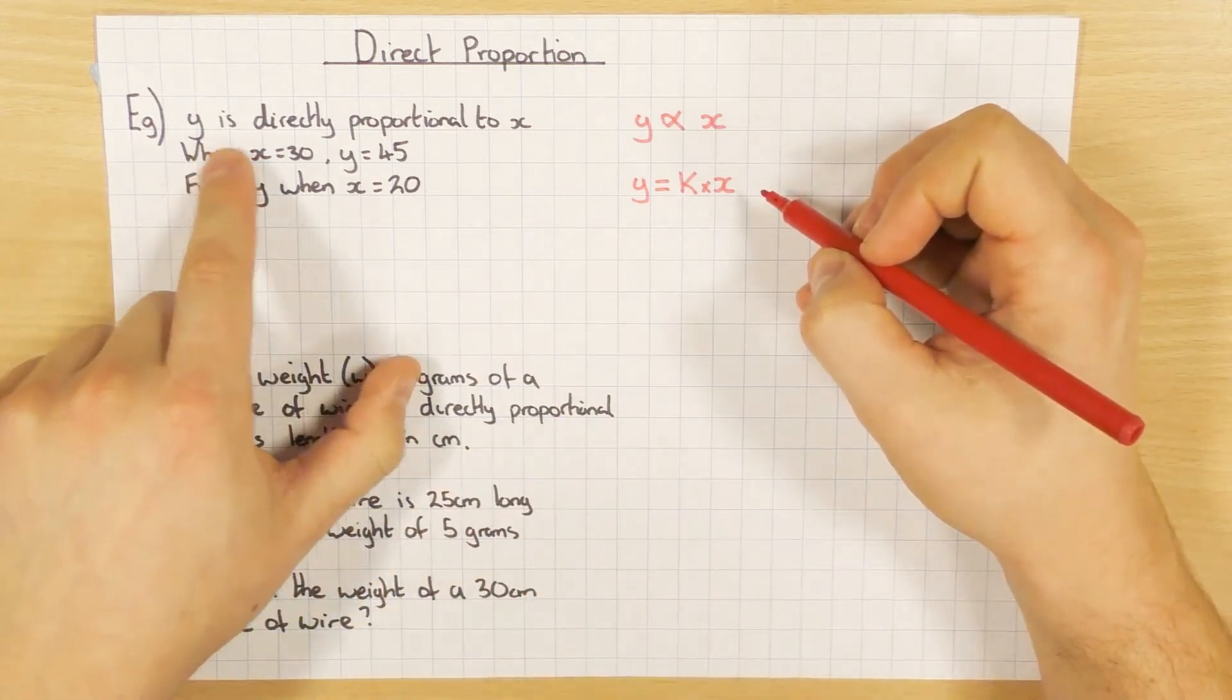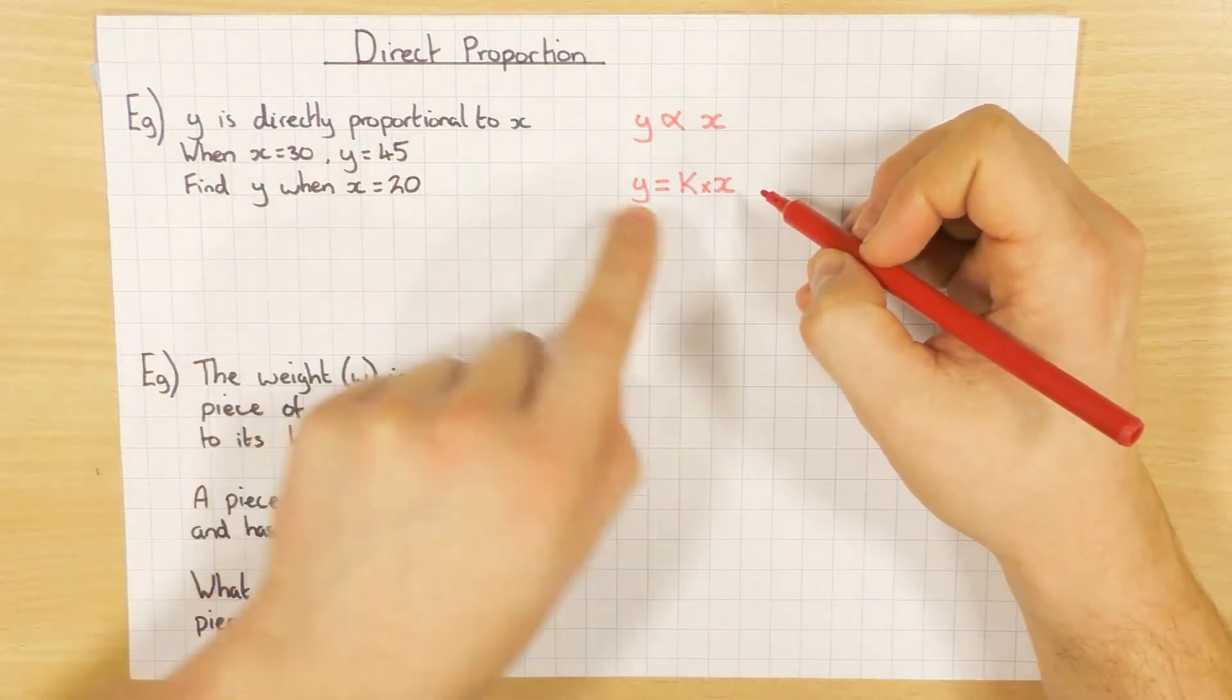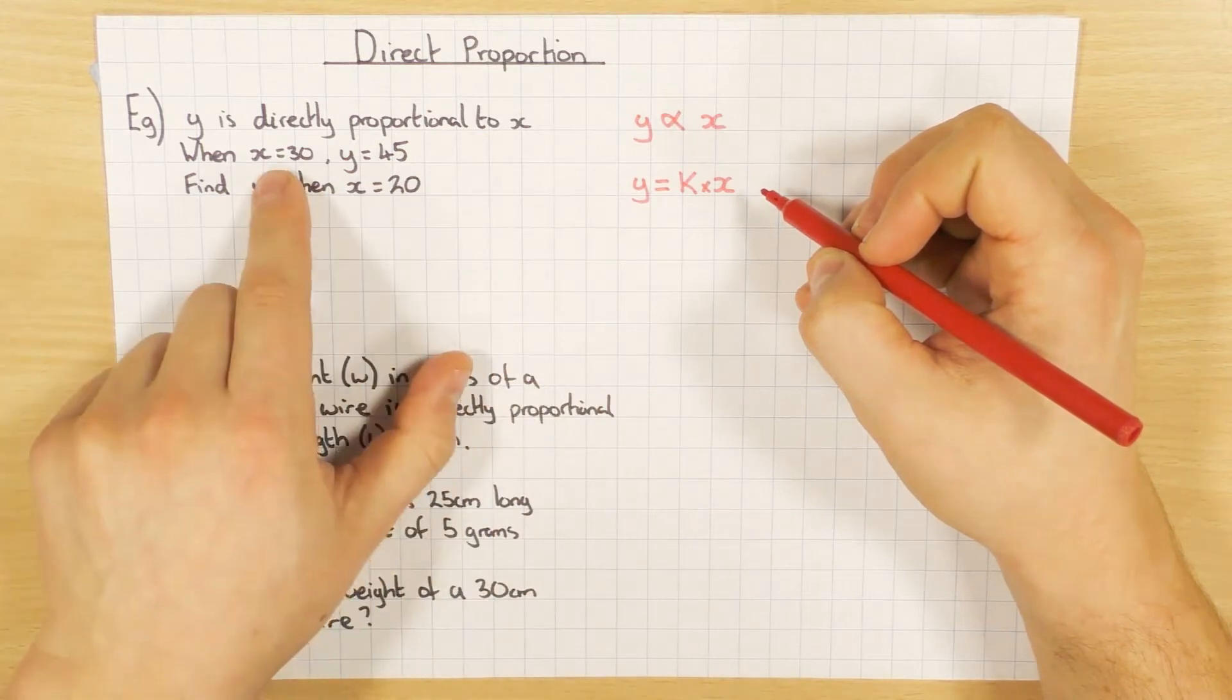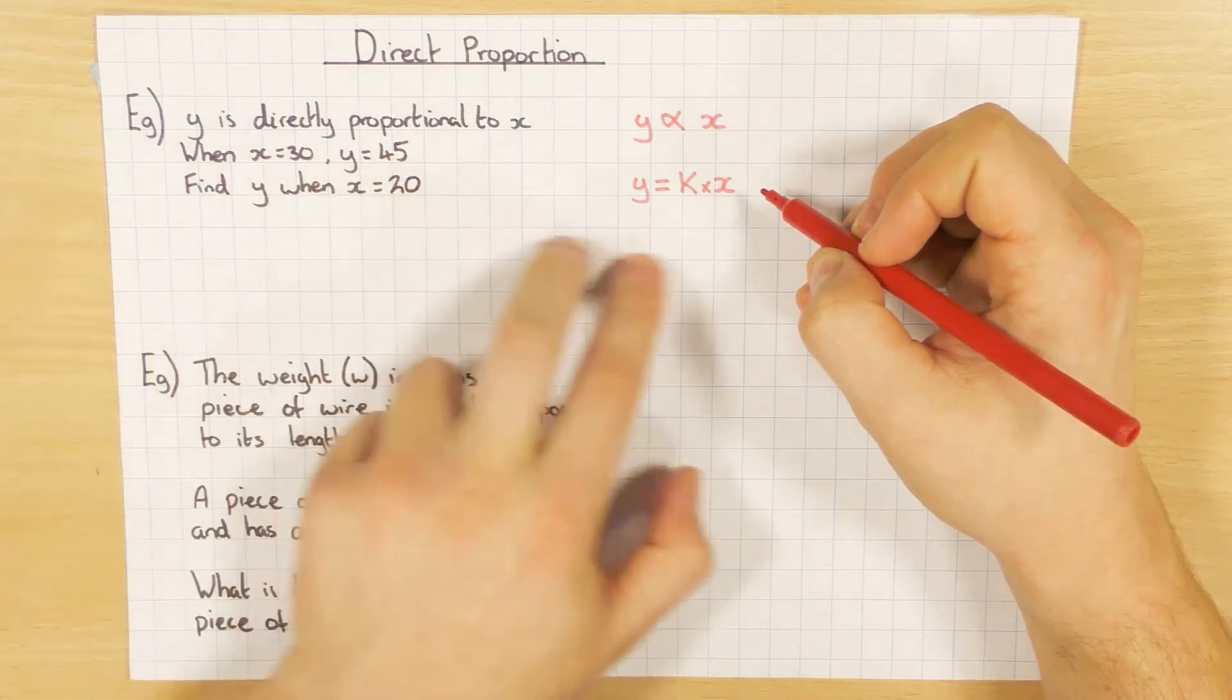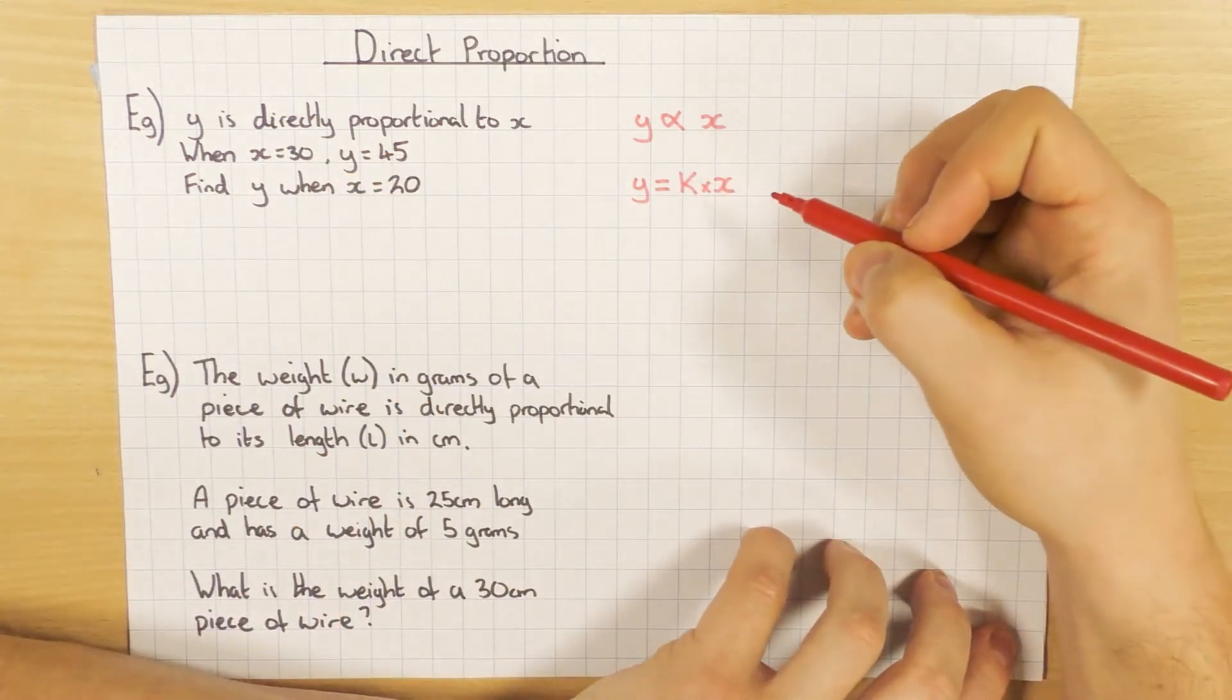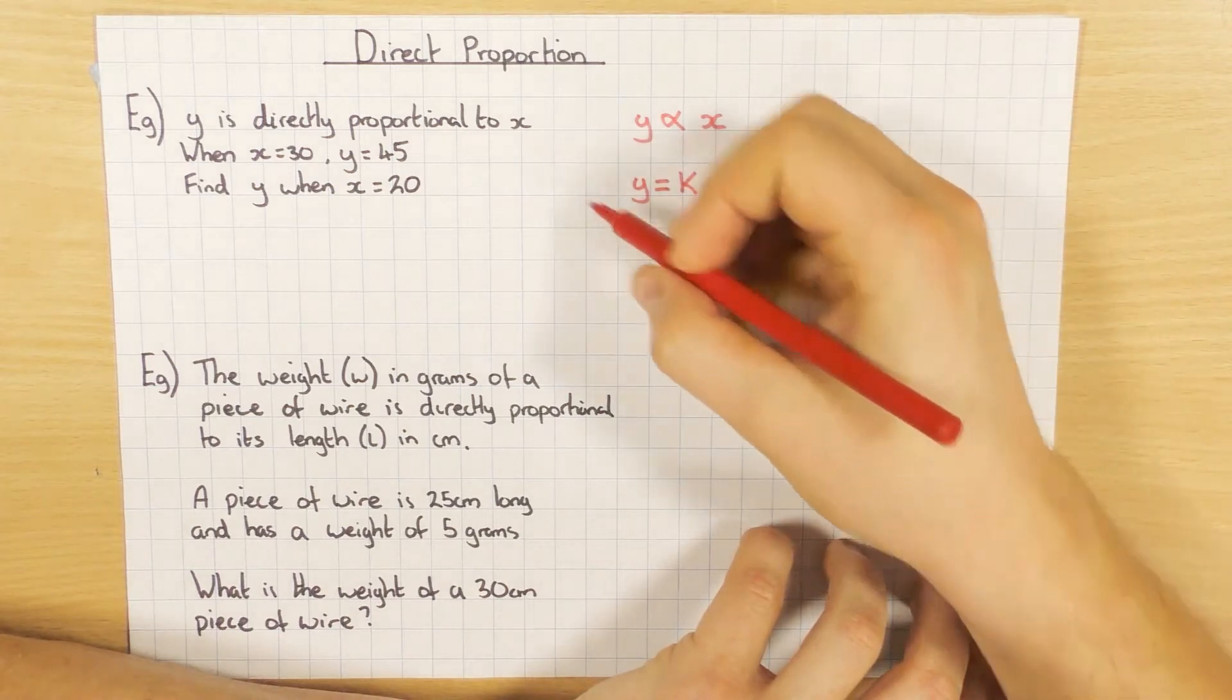Now when you get a question like this, it'll tell you that y is directly proportional to x to help you set this up, and then it'll give you two values, in this case x is 30 and y is 45. And we can use them into our new formula here to work out what k is. So let's do that.